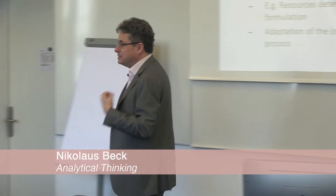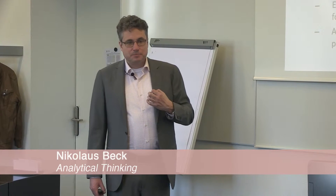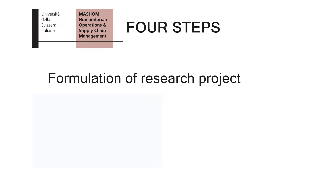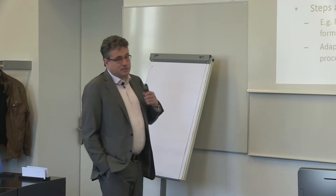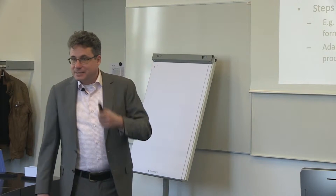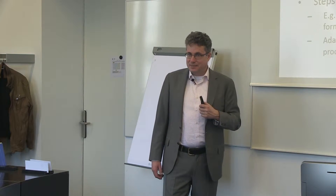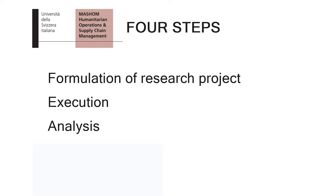One can divide the research process into three, and even four, general steps. You first have to formulate your research project — the formulation phase. After the formulation, we have the so-called execution phase, which means actually collecting data and thinking about the right methods to analyze the data. And then there is the analysis of the data that you have collected, and finally you should come up with certain conclusions.